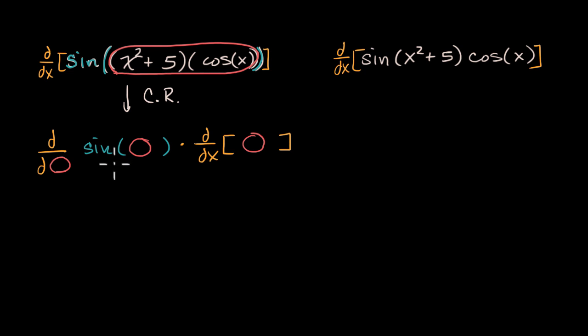The derivative with respect to that something of sine of that something times the derivative with respect to x of the something. Now what would that be, tangibly, in this case? Well, this first part, I will do it in orange, would just be cosine of x squared plus five times cosine of x. So that's that circle right over there.